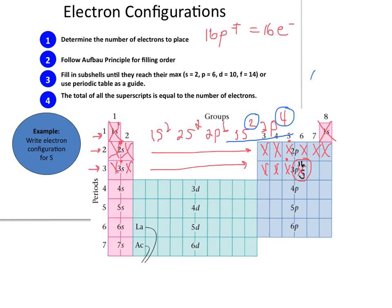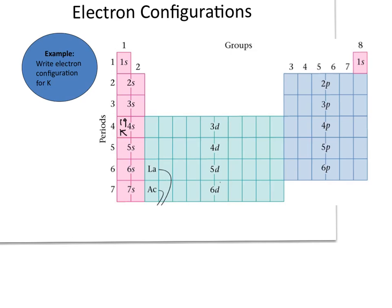Now let's write the electron configuration for potassium. Potassium is number 19 on the periodic table, so it has 19 protons and, as a neutral atom, 19 electrons. We need to write the address for 19 electrons, starting with the first energy level. The S sub-level can hold 2 electrons, so 1s². The first energy level is filled, so we move to the second energy level.